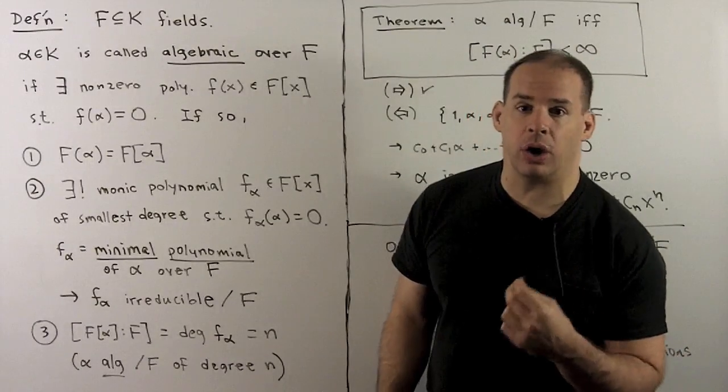For something of a higher degree of difficulty, we have cosine of two pi over 17.